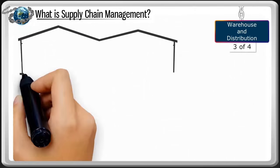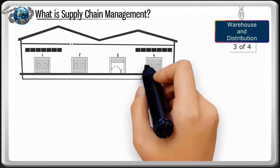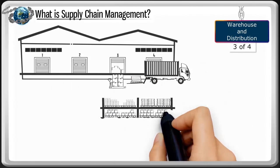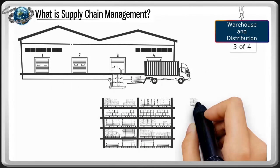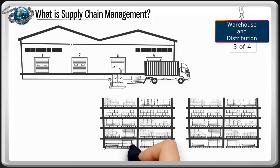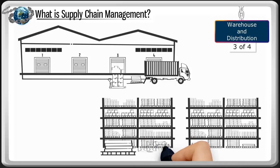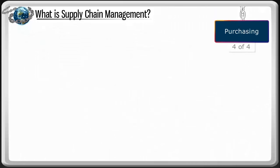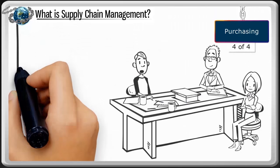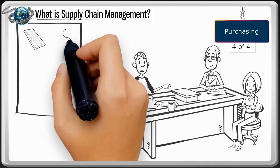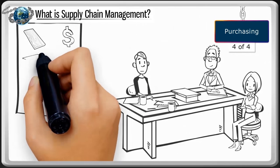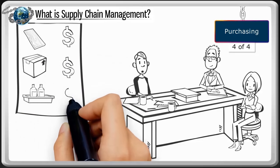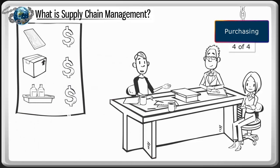Warehouse and distribution includes the sites and locations where everything that flows through the supply chain is stored. We refer to all stored items as inventory. Purchasing is the process of buying everything needed at the best price and quality to produce a final product that meets the customer's requirements.